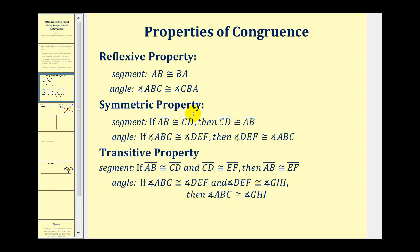For the symmetric property of congruence, the order in which two congruent segments or congruent angles are listed does not change their congruence. And lastly, the transitive property is kind of like a link. If segment AB is congruent to segment CD, and segment CD is congruent to segment EF, then segment AB is congruent to segment EF.